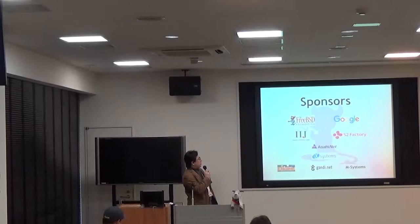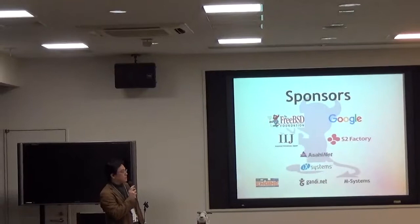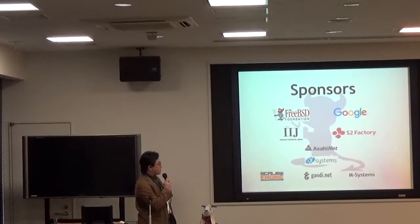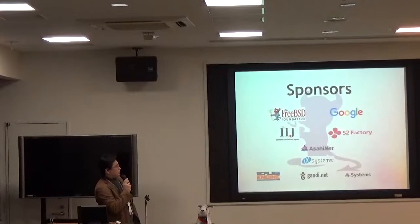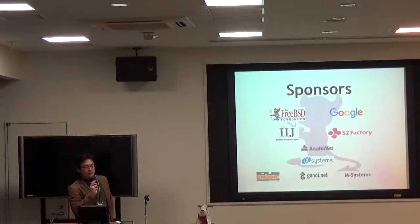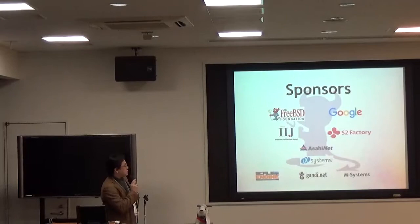This year IIJ is offering the wireless network, because the wireless network provided by the university often becomes unstable. So we will have two wireless networks this year. We also have AsahiNet and IX systems again, along with a number of small IX systems. We have Scale Engine, which is offering live video streaming — they have excellent quality, and we will broadcast three total tracks until the end of the conference.